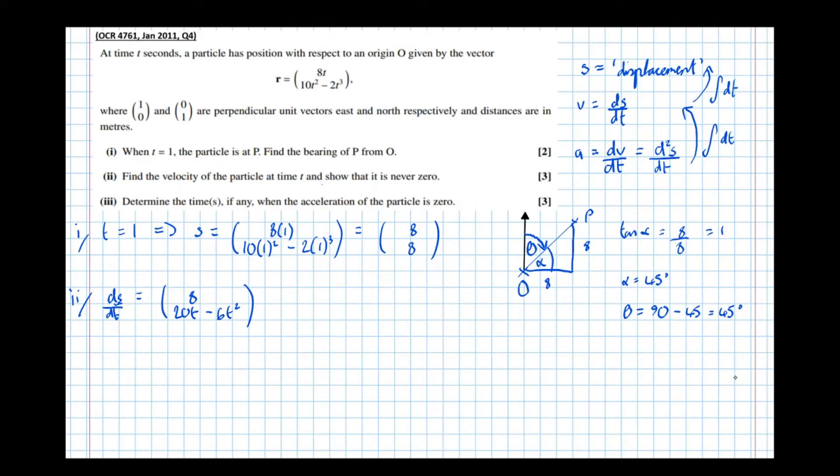To show it's never zero: the velocity can never be zero because the x component, or i component, is always 8.